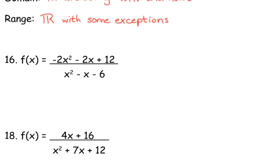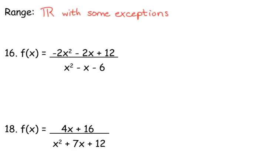Let's look at number 16. We said that our domain was all real numbers except for our holes and our vertical asymptotes. So how do we find holes? Does anybody remember? Not the numerator equal to zero — we factor and cancel. Things that cancel give us holes. So we need to factor the numerator and the denominator.